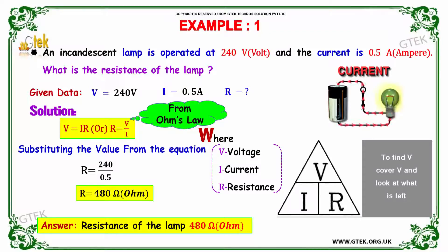Now we'll move on to the next one. An incandescent lamp. So this is the one. So we got the answer as resistance of the lamp is 480 ohm.